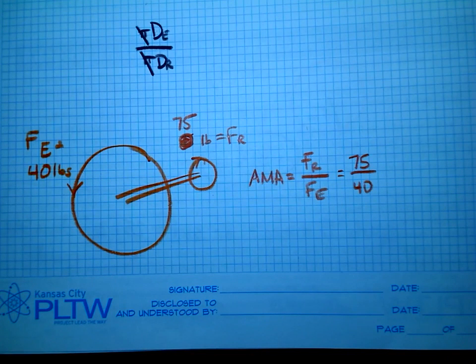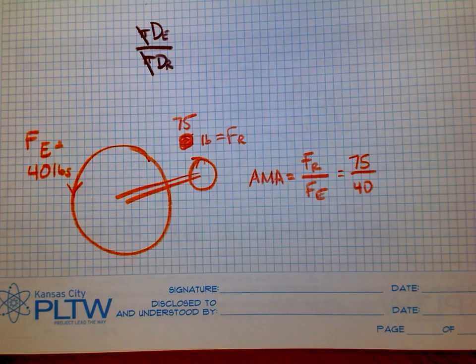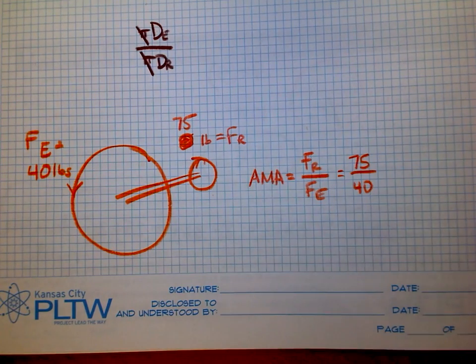Now, that does reduce, 75 over 40, that's going to reduce to, of course, I'm getting a call on my phone, so I can't use it. Hold on just a second. 75 divided by 40 is 1.875.